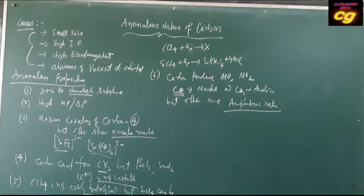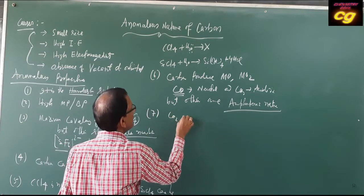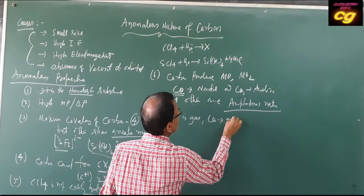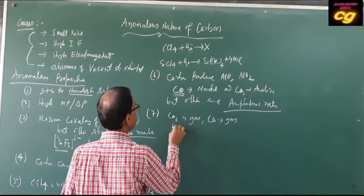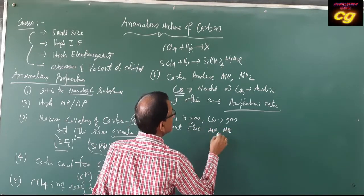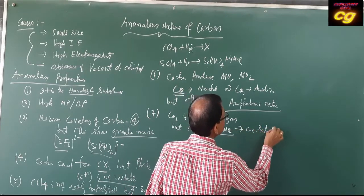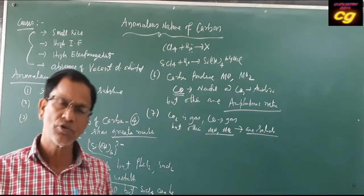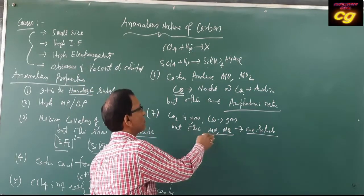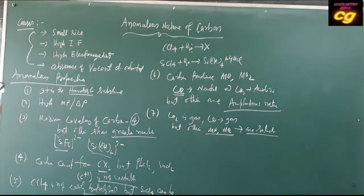Another very important difference: carbon dioxide and carbon monoxide are both gases. But almost all monoxides and dioxides of germanium, silicon, and higher members of the group are solids. Carbon is unique in that both its monoxide and dioxide exist in the gaseous state.